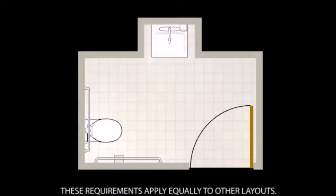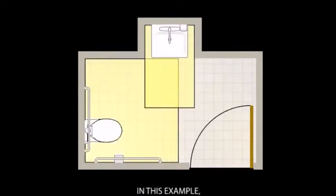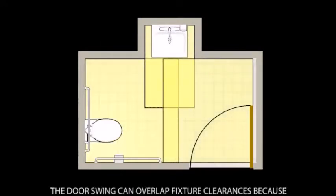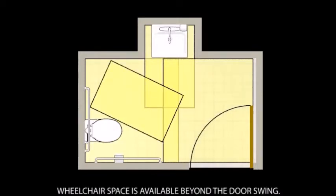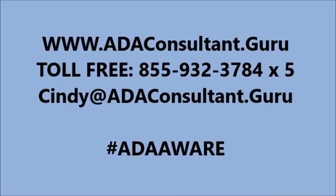These requirements apply equally to other layouts. In this example, the door swing can overlap fixture clearances because wheelchair space is available beyond the door swing.